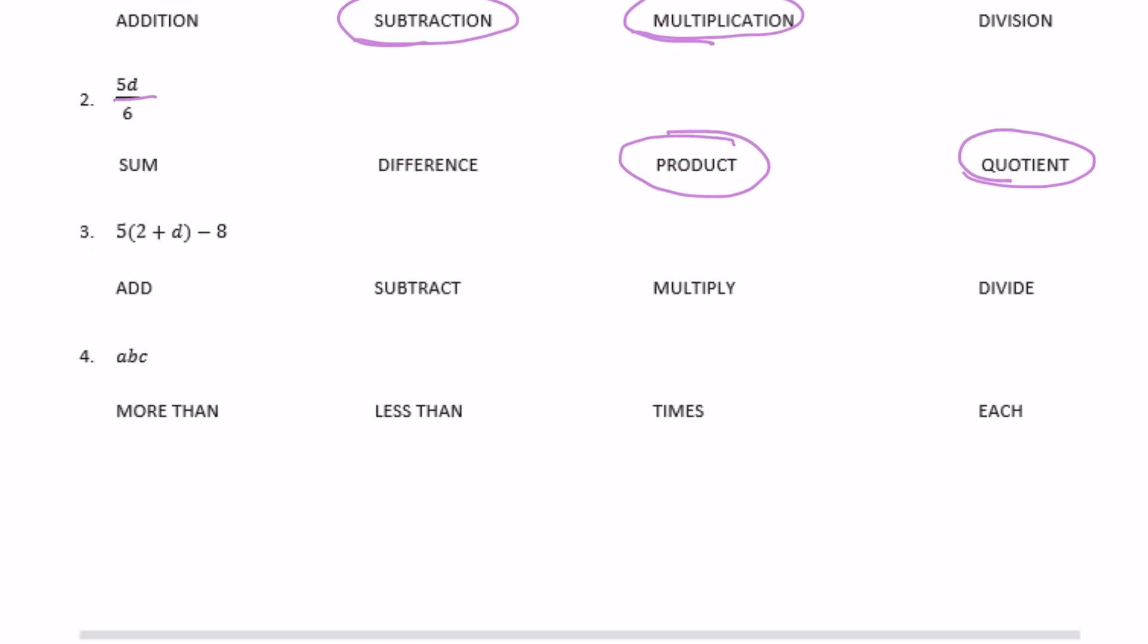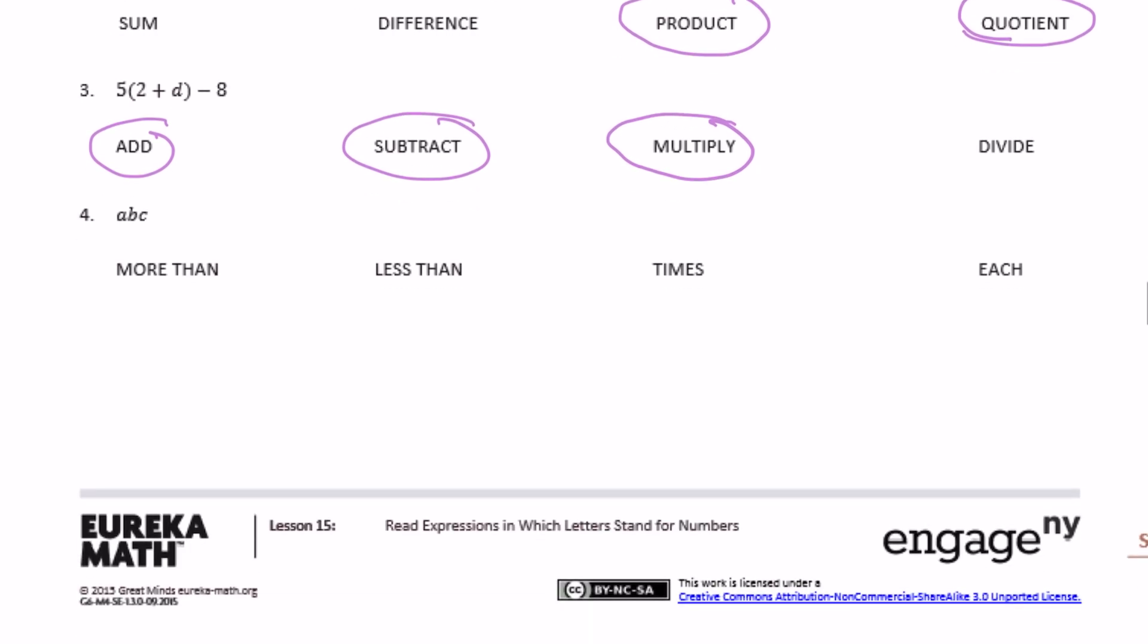All right, we have 5 times the sum, so we're already multiplying, quantity of 2 and d, 2 plus d, so we're adding and then we subtract 8. And then abc means a times b times c, so we're multiplying or times.